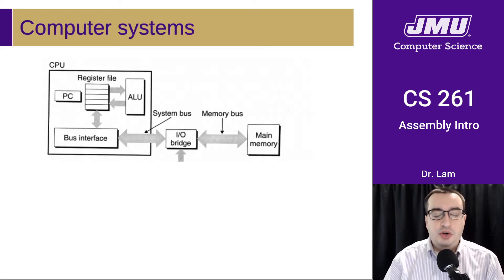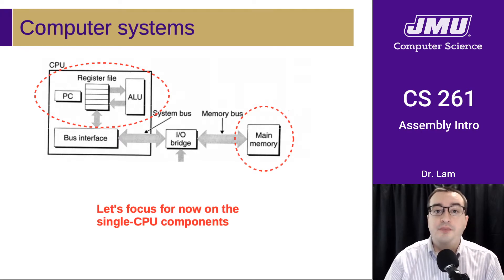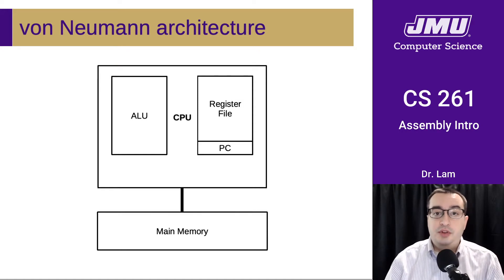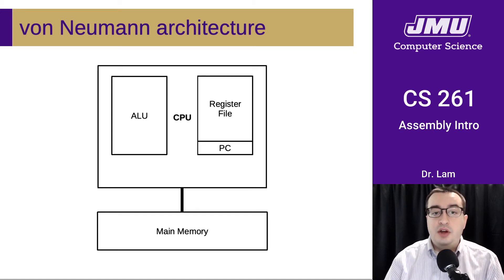We're going to take a look at computer systems and focus on the single CPU components — the ones primarily involved in having a single program running on a single CPU. This simplified diagram shows what's called a von Neumann architecture, where you have both programs and data stored in memory, and a CPU connected to main memory via some sort of bus. There is something called a von Neumann cycle, which is the process that the CPU executes.